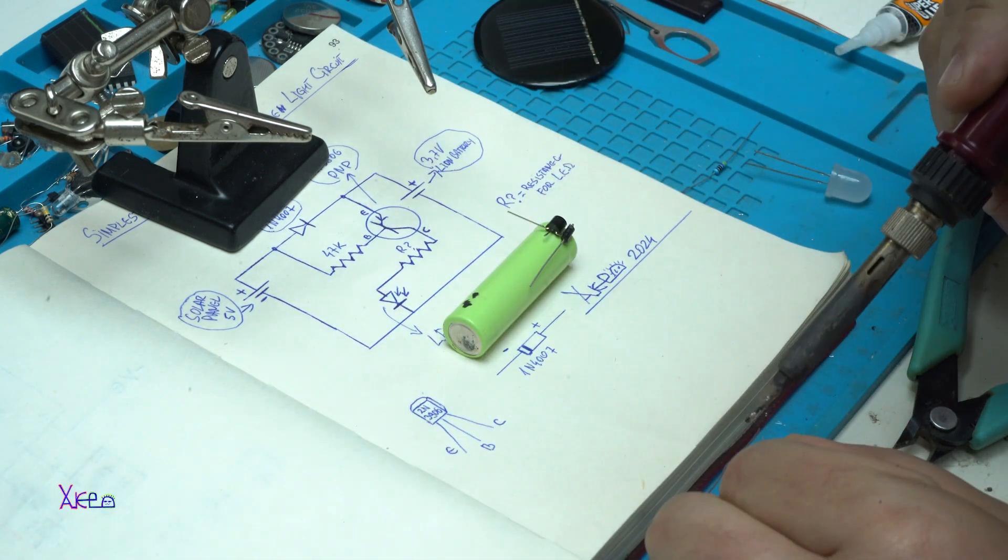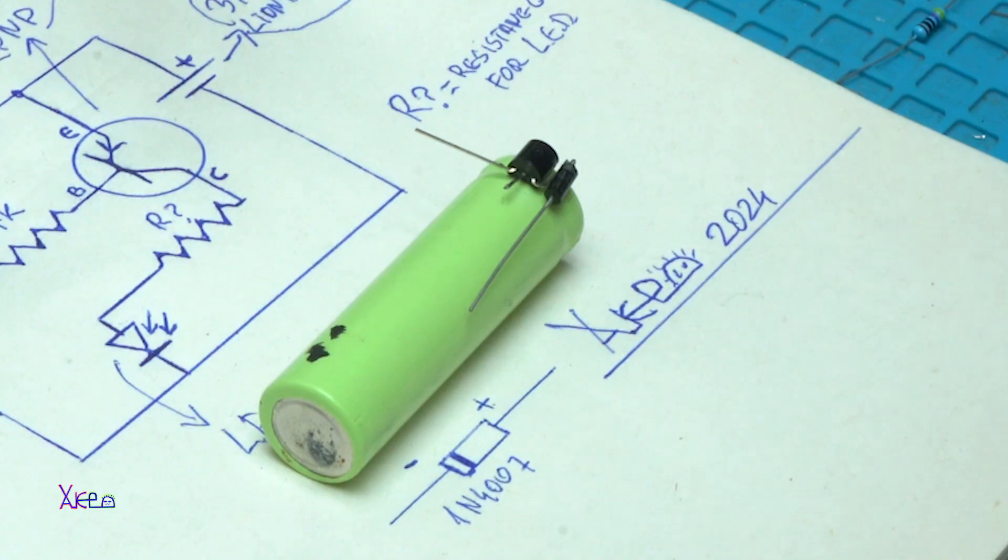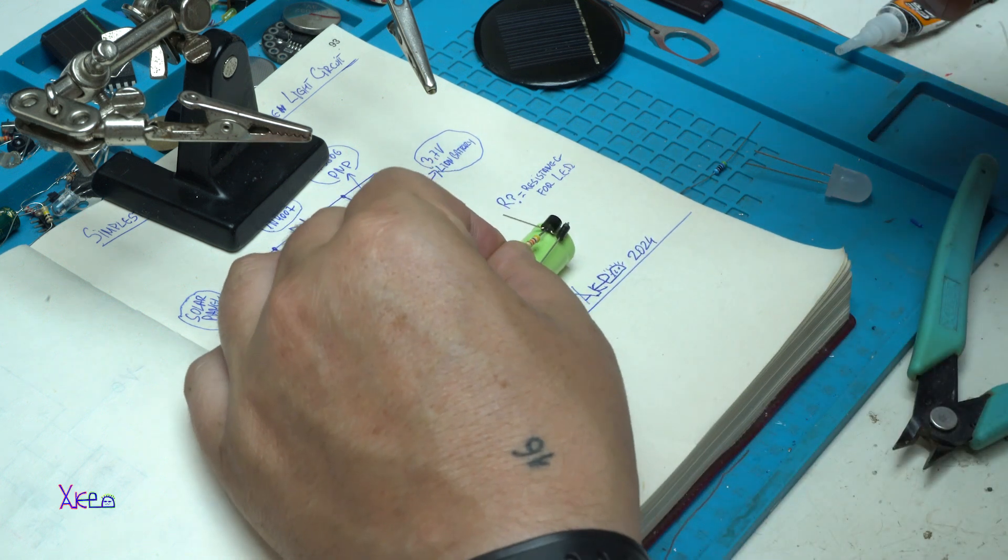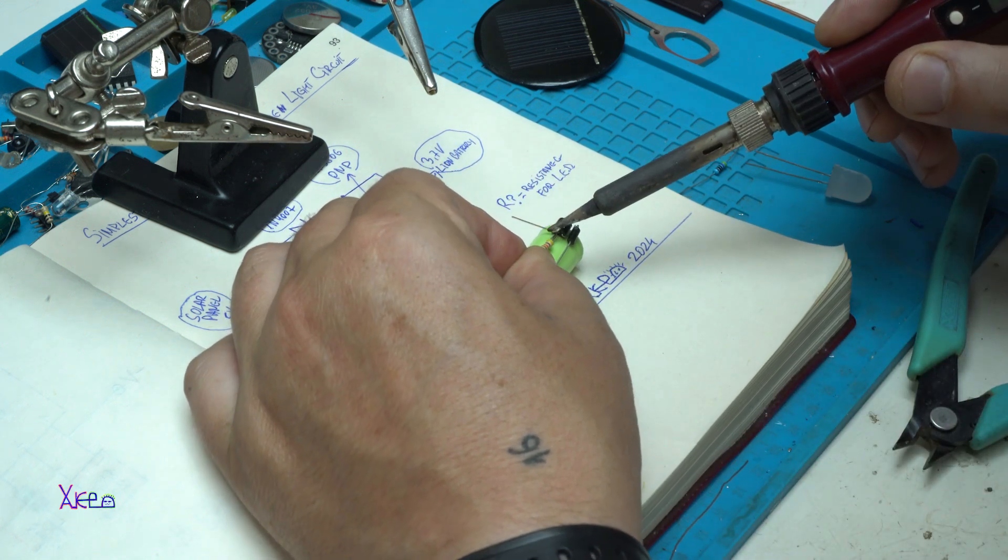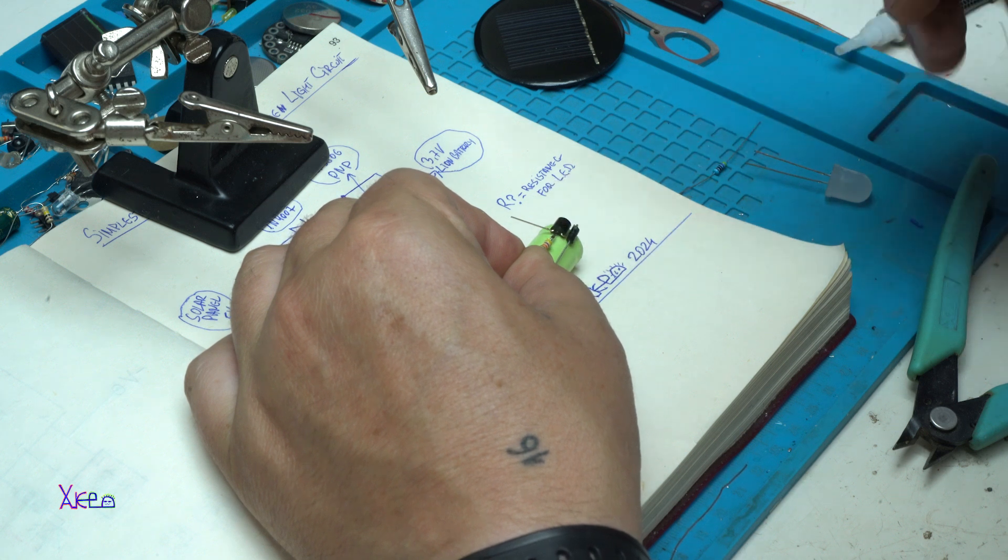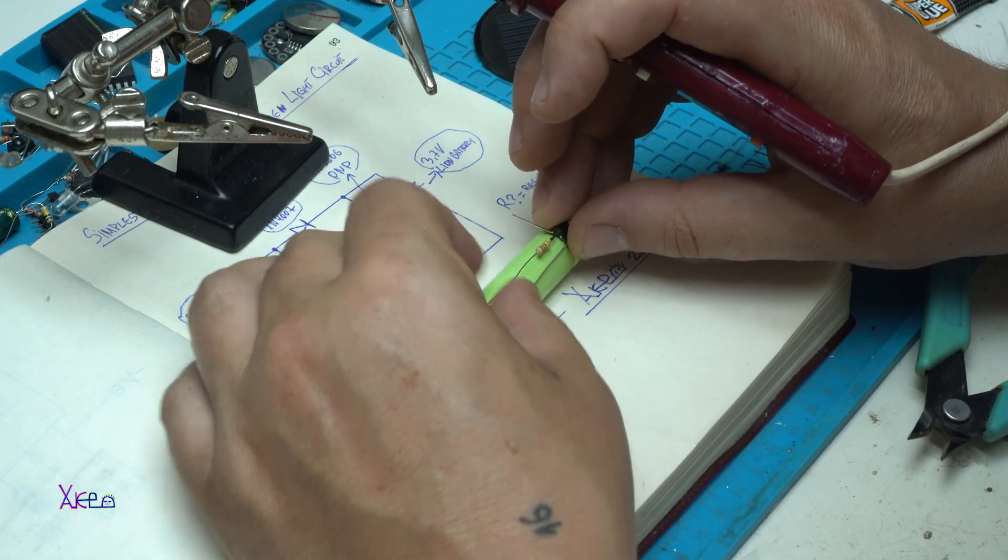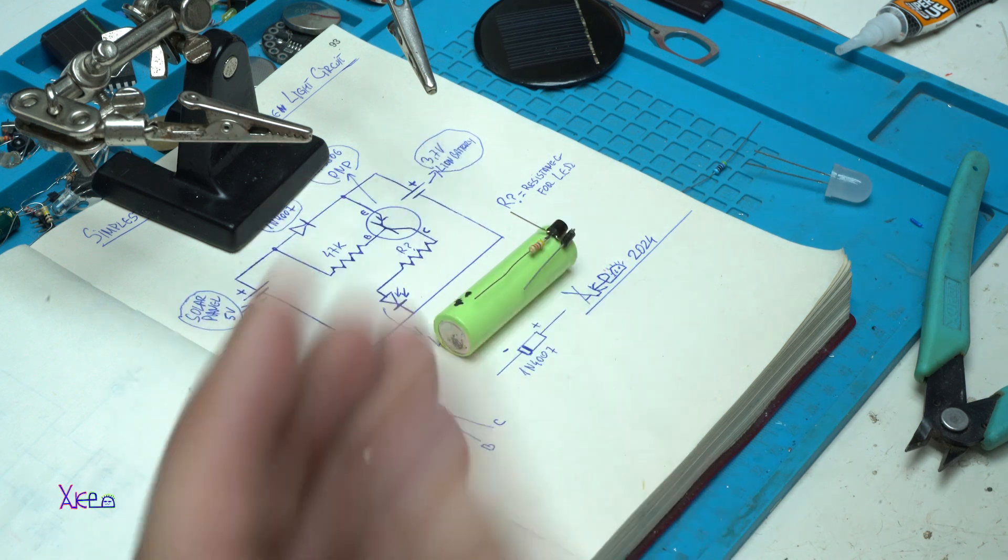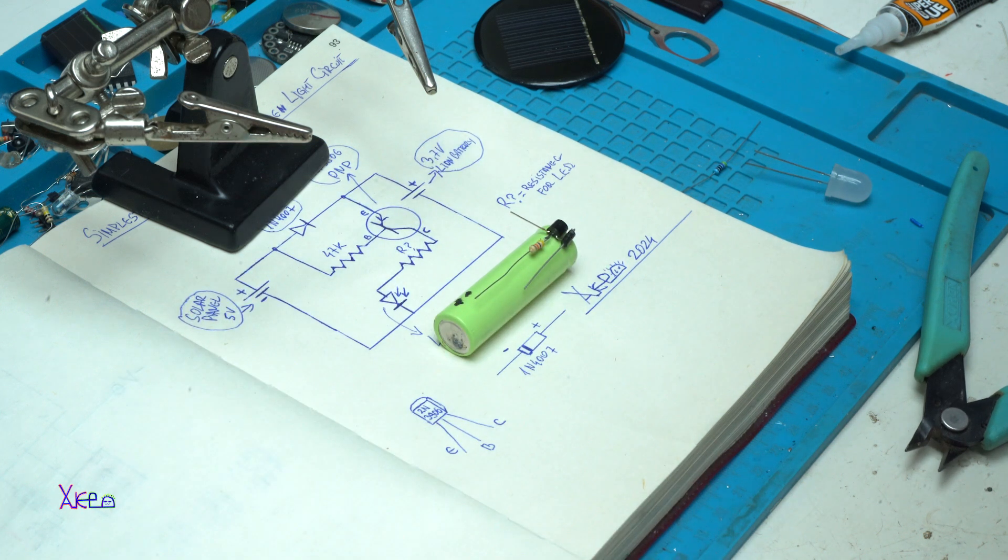As you can see, I fixed the transistor with super glue directly on the battery. I think that it is not a problem. Now I am soldering the 47 kilo ohm resistor to the base of the transistor and I am almost finished.